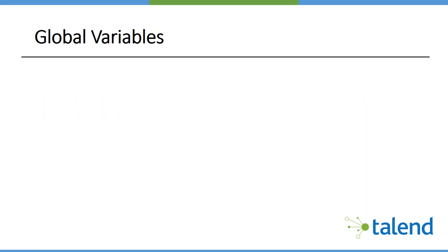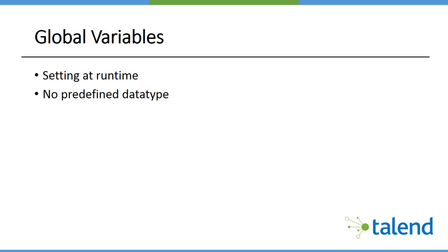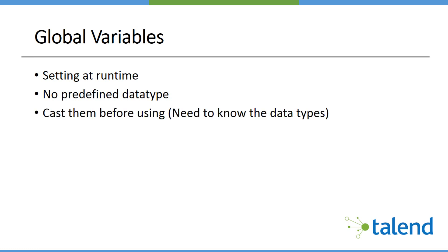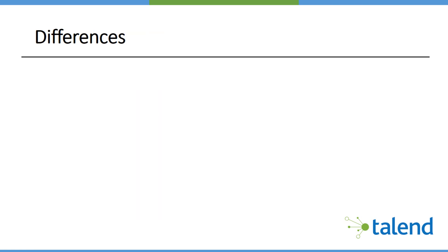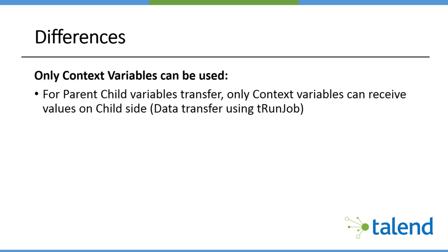Global variables are generally set at the time when the job is already executing, so we are setting values at runtime. There is no predefined data type for global variables — we need to cast the variable when we use it, making sure we specify whether it's a string or integer. Global variables are essentially like a global hash map with no defined data types.